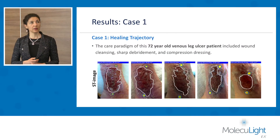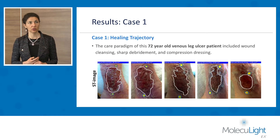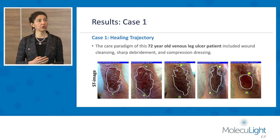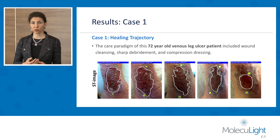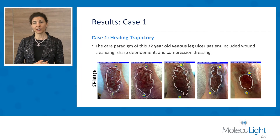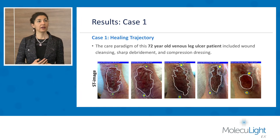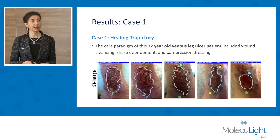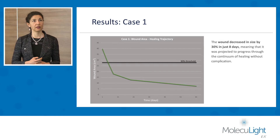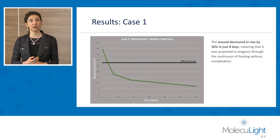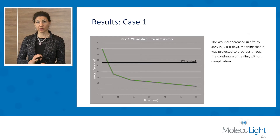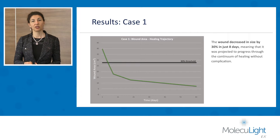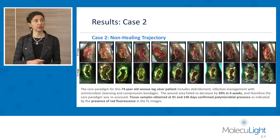Here is another example where the wound was measured weekly. This is a 72-year-old patient with venous leg ulcers, and I could see great progression in wound healing. This is also an amazing tool to show patients how their wound is healing, and they are very happy. In this particular case, the wound decreased in size by 30% in just eight days, confirming my treatment was working well so I continued with the same protocol.